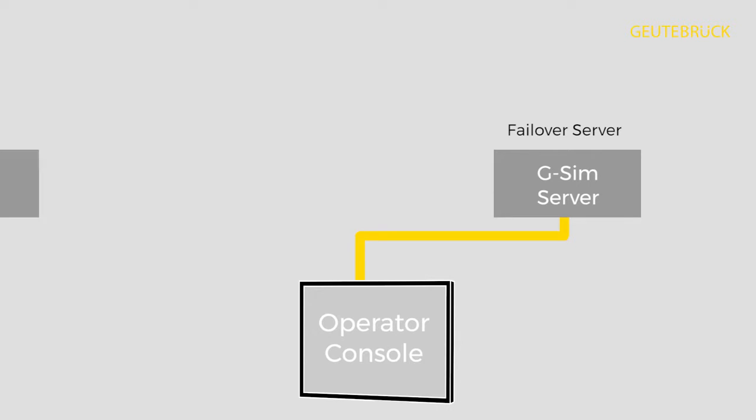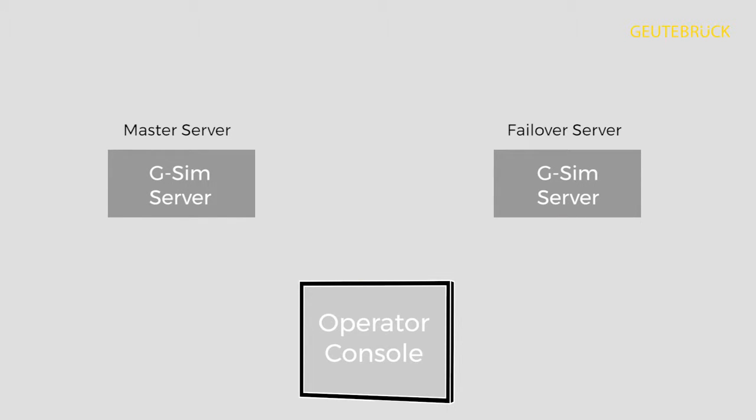As soon as the repaired server is back in the network, the original functionality will be restored. The availability of the cameras is of the same importance. You can only control your processes as long as you can see live images. So what happens if one recorder fails and the connected cameras are no longer available?